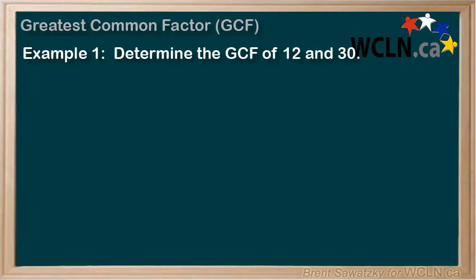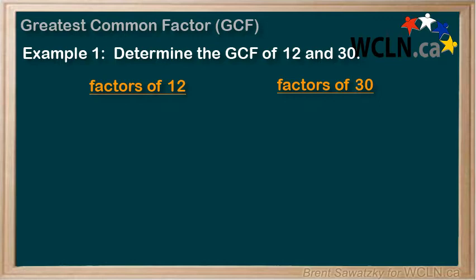We have two numbers that we're breaking up into factors: 12 and 30. We're pretty good at identifying factors, so let's break these up quickly. For 12, we would have the factors of 1 and 12, 2 and 6, and 3 and 4. That gives us 3 factor pairs, or a total of 6 factors.